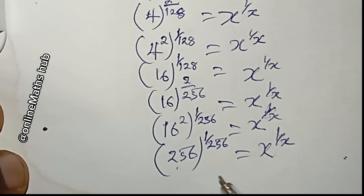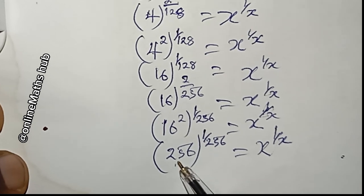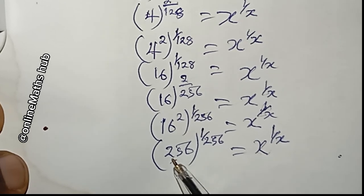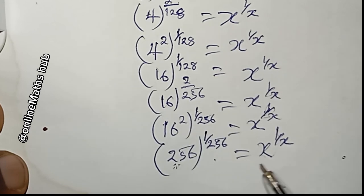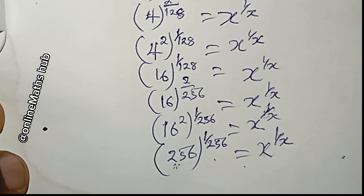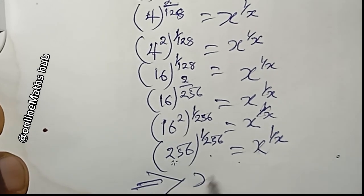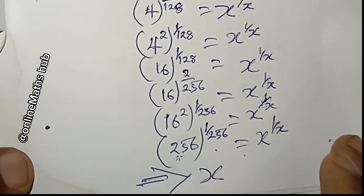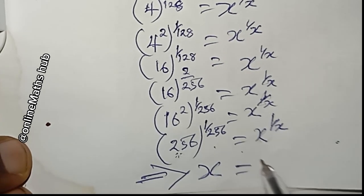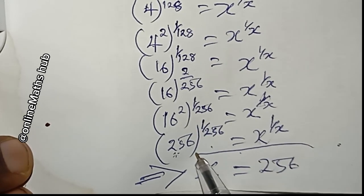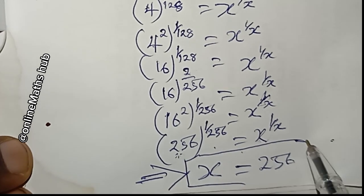Now we can clearly compare both sides of the equation. We have 256 to the power 1 over 256 on the left, and x to the power 1 over x on the right. By direct comparison, x is equal to 256. This is the solution to the equation.